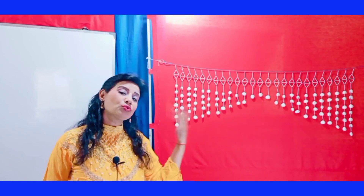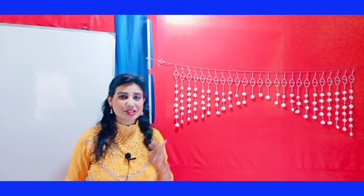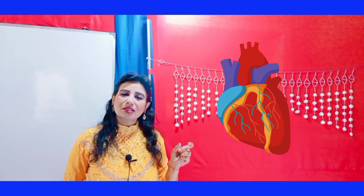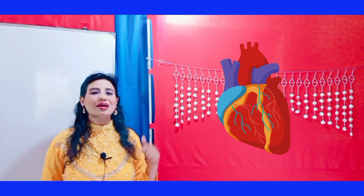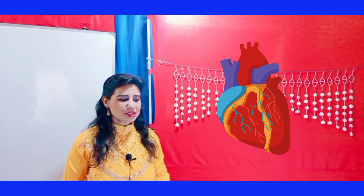Remember the basic difference: arteries are those blood vessels which are carrying blood away from the heart. Please underline this — arteries carry blood away from the heart. Arteries always carry oxygenated blood. Exception: pulmonary artery — pulmonary artery is going to carry deoxygenated blood. The reason I will explain with the help of the diagram. Also, arteries do not have valves, so if an artery is cut, blood oozes out in jerks.